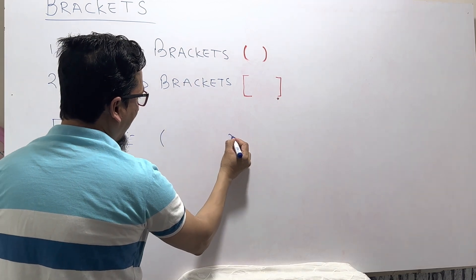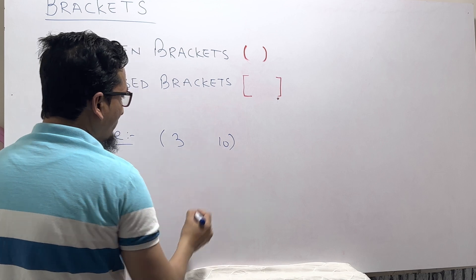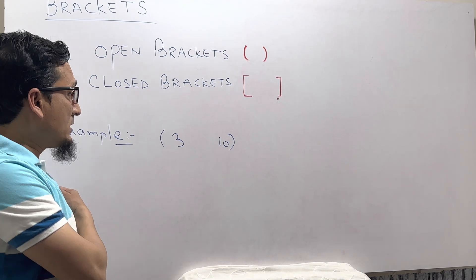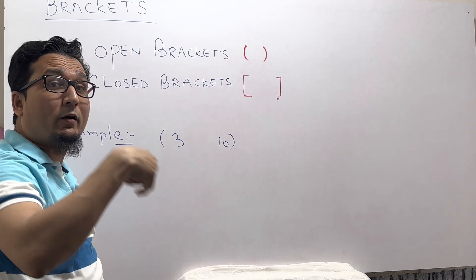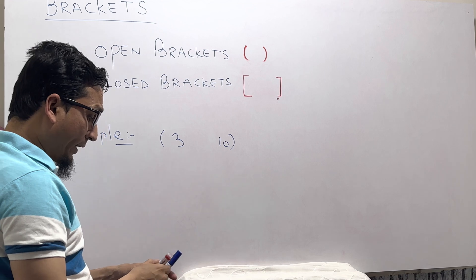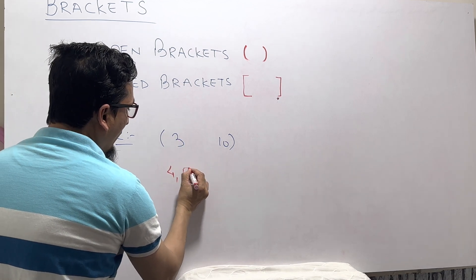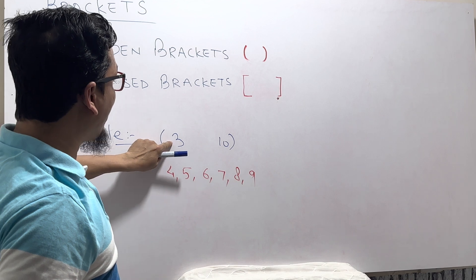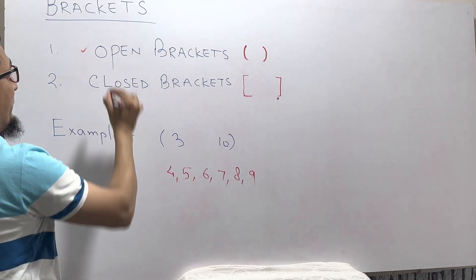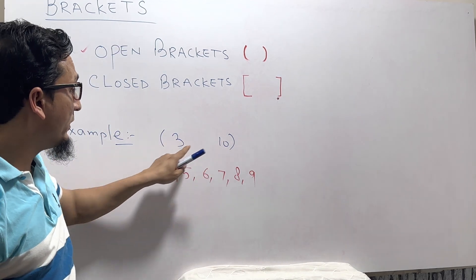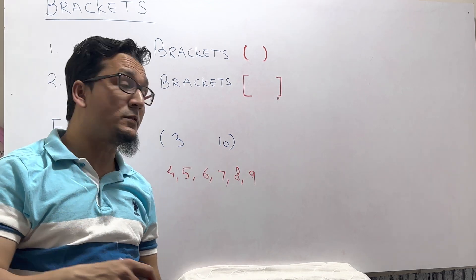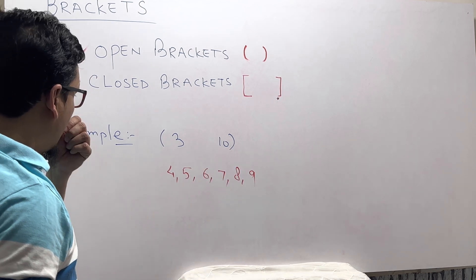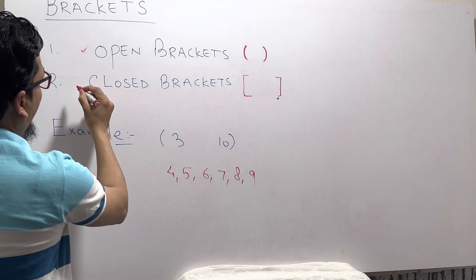For example, if I use the open bracket and write the number 3 to 10 — that is, (3, 10) — the open bracket means we are not going to include 3 and 10. We will take all the numbers which come between 3 and 10. So the numbers are 4, 5, 6, 7, 8, and 9. We are not going to include 3 and 10. This is the meaning of the open bracket.